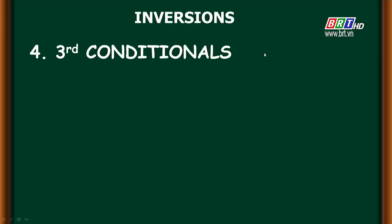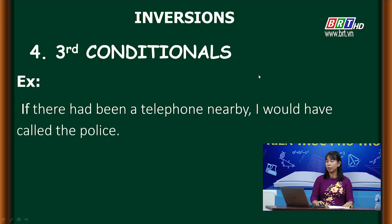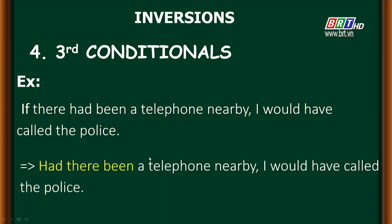Now we go on with number four: third conditionals — câu điều kiện ba. Example: 'If there had been a telephone nearby, I would have called the police.' Để đảo câu điều kiện ba, chữ 'if' bị biến mất, và chúng ta dùng động từ 'had' đảo lên trước chủ ngữ: 'Had there been a telephone nearby, I would have called the police.' Khi đảo câu điều kiện ba, ta bỏ 'if' và đảo câu về giống như cấu trúc câu hỏi.